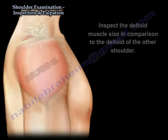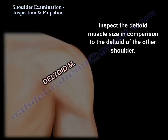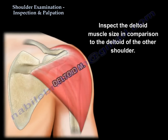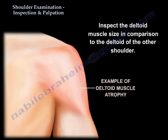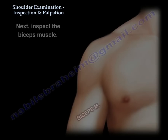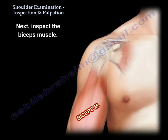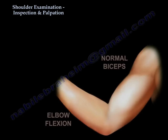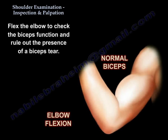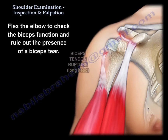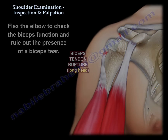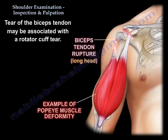Then you start inspecting the deltoid — see its size and compare it. Then you start inspecting the biceps. Flex the elbow and see the biceps to rule out a tear. A biceps tear may be associated with a rotator cuff tear.